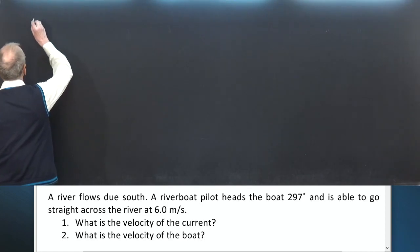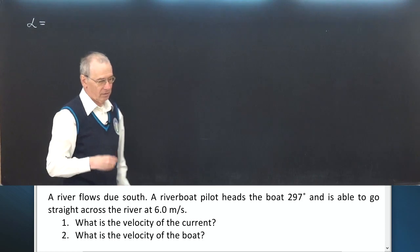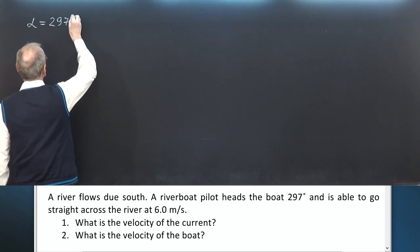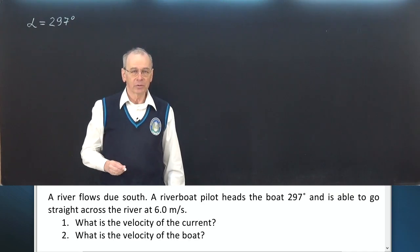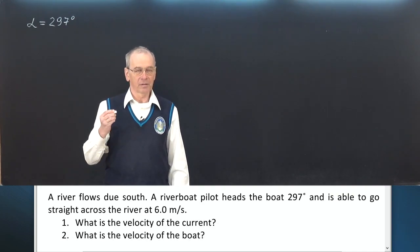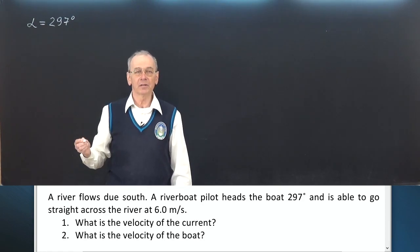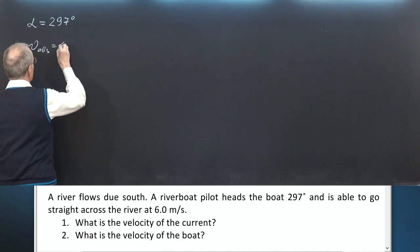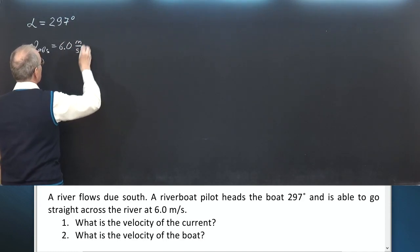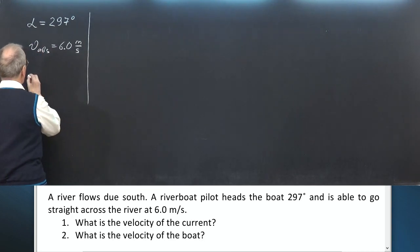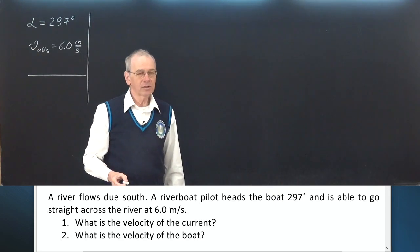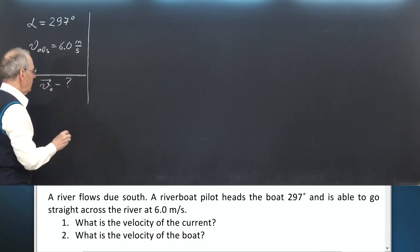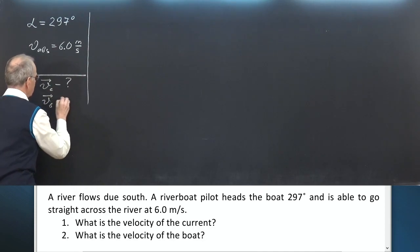Let alpha be the azimuth of the boat: 297 degrees. Let V_absolute be the velocity of the boat with respect to ground. V_absolute equals 6 meters per second. We have to find the velocity of the current, V_current — velocity is a vector — and we have to find the velocity of the boat, V_b.